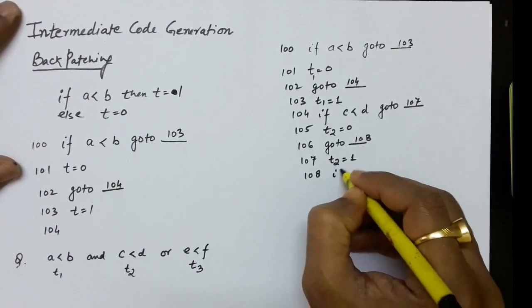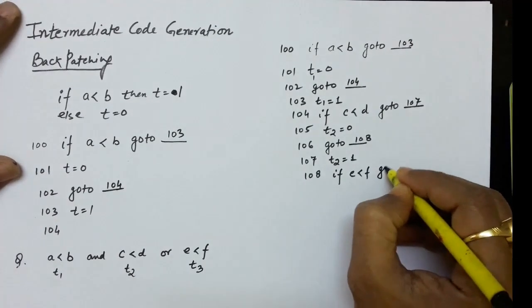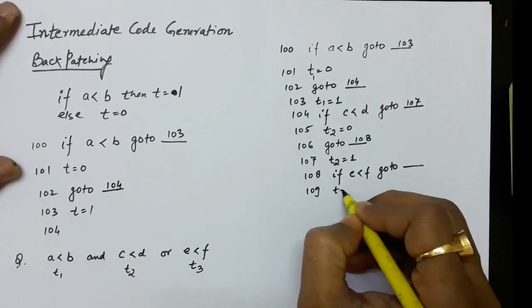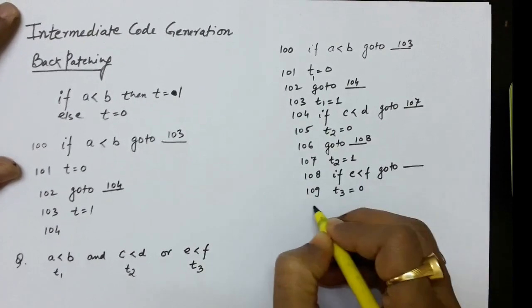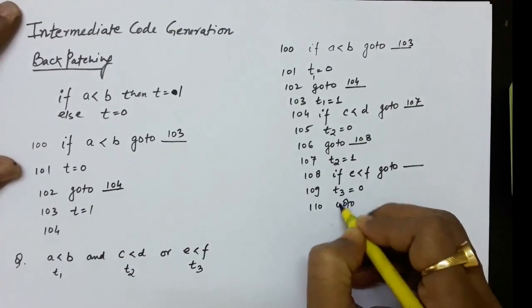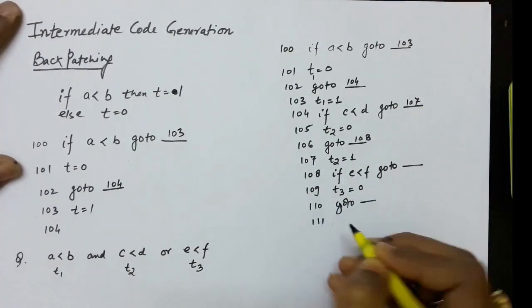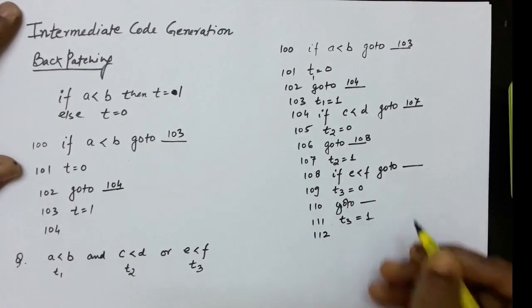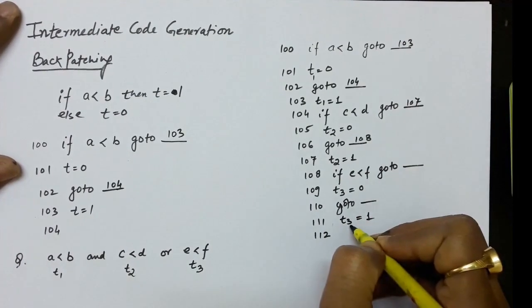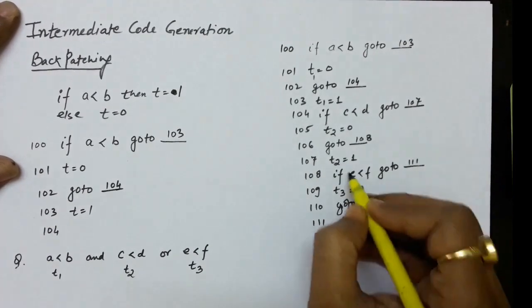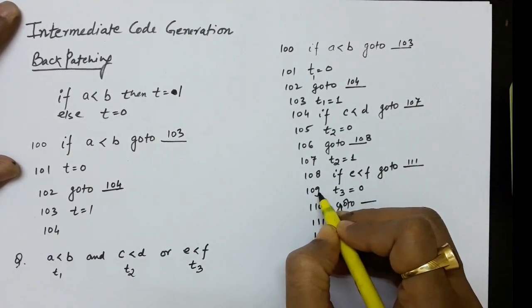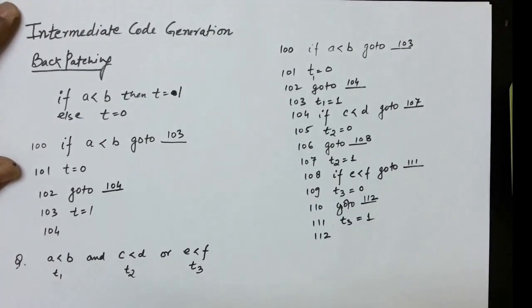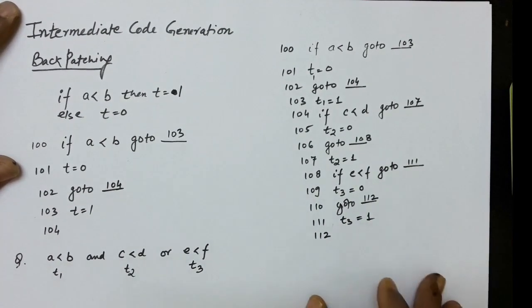For e less than f, starting at label 108: if e<f goto (blank). The false part at label 109: t3 equals 0, then unconditional jump (blank). At label 111: t3 equals 1, and label 112 follows. If e<f is true we go to 111 to set t3=1; if false we fall to 109 setting t3=0, then jump to 112.